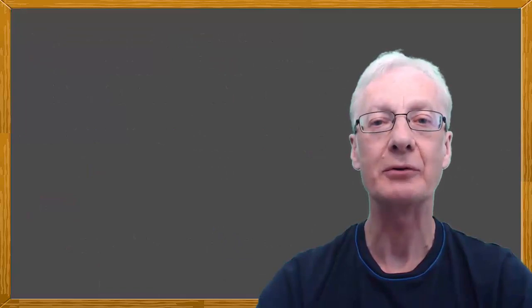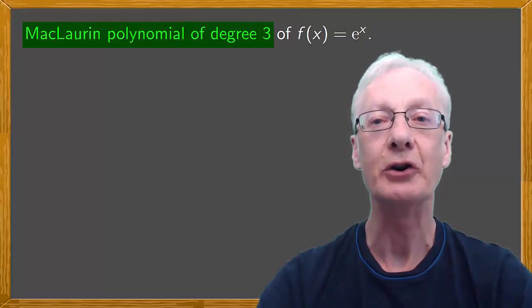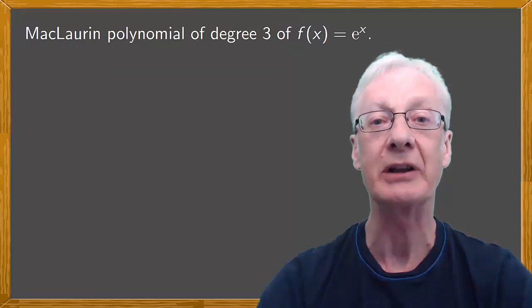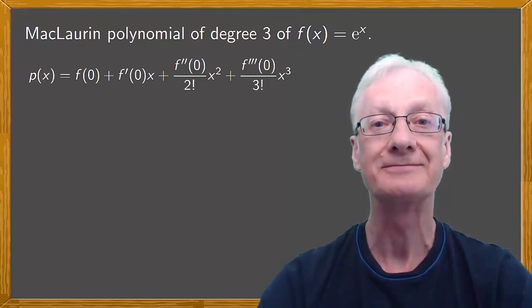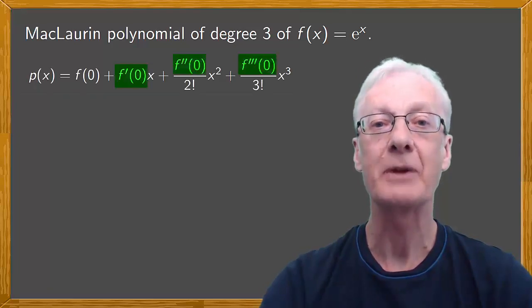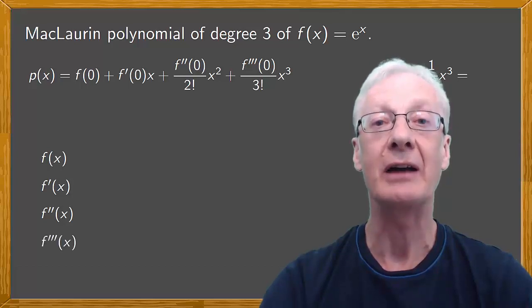Let's look at a simple example. Say we have the function f(x) equals e to the x and we want to calculate the McLaren polynomial of degree 3 of f. As you know, we first calculate the Taylor polynomial of degree 3 of f at x equals 0. Next we calculate the derivatives that appear here, up to order 3. Then we write f(x), f'(x), the second derivative of f(x), and the third derivative of f(x).